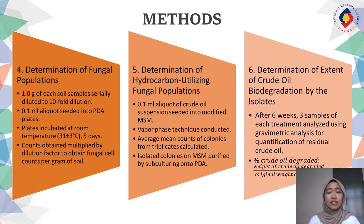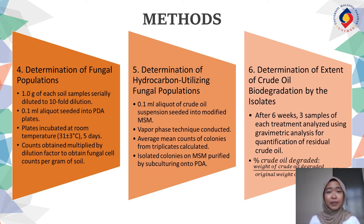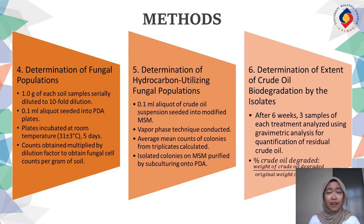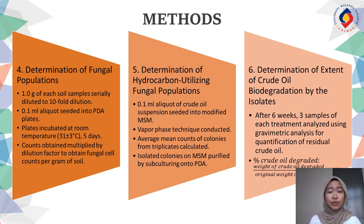Fifth, determination of hydrocarbon utilizing fungal population: 0.1 ml aliquot of crude oil suspension is seeded into modified mineral salt media. Vapor phase technique is conducted, and then the average mean count of colonies from triplicates is calculated. Isolated colonies on MSM are purified by subculturing onto PDA.